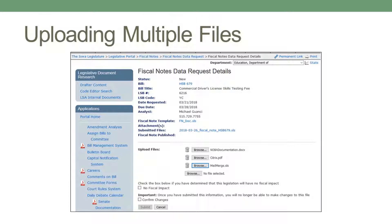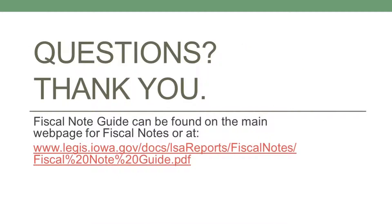Finally, you are able to upload multiple files in the LSA portal. This could be helpful if the fiscal impact information is better presented in an Excel spreadsheet. Simply click the Browse button each time to upload a file. Then click Confirm Changes and Save. The uploaded files will then appear in the upper portion of the request. Thank you for watching this training and be sure to review the Fiscal Note Guide or contact your fiscal analyst with any questions you have about responding to fiscal data requests.